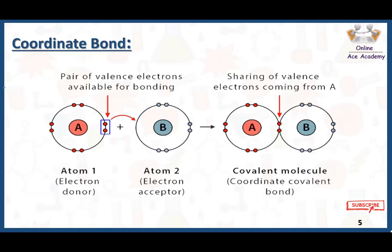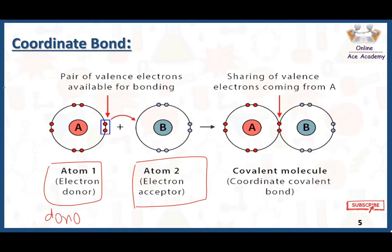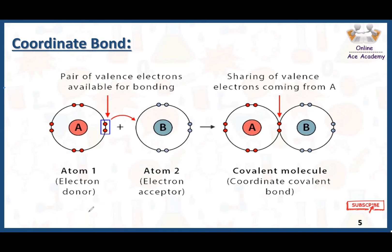Here is the general mechanism of how a coordinate bond is formed. Atom number one acts as the donor atom and atom number two acts as the acceptor atom. Atom one fulfills the condition of having eight electrons in its valence shell. Atom two fulfills the condition of the acceptor atom because it has a deficiency of a pair of electrons. Atom one shares its pair of electrons with atom two, and both now have a complete octet — eight electrons each — and a coordinate bond is formed.